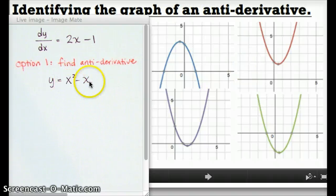But then you probably ran into a problem because none of these graphs is x squared minus x. For example, if I plug in zero to this function, I should get zero out, but none of these graphs cross the origin. So you probably got stuck.